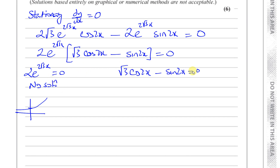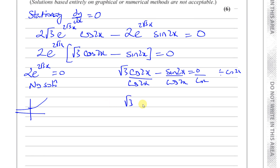For the trig equation, we have cosine of an angle and sine of the same angle combined. If we divide everything by cosine 2x, we eliminate one ratio and the sine-over-cosine ratio becomes tan 2x. Dividing 0 by cosine 2x gives 0, so we're left with root 3 minus tan 2x equals 0. Therefore tan 2x equals root 3.